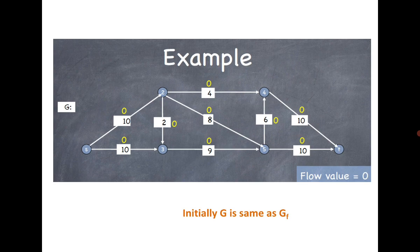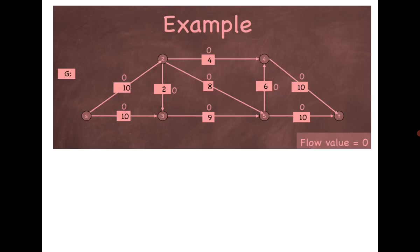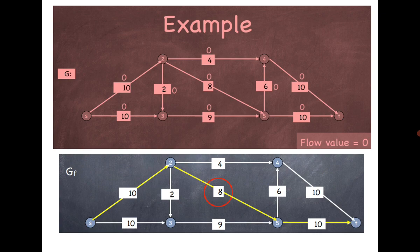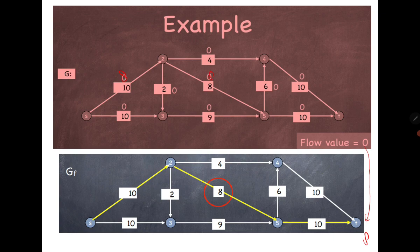In this example, initially graph G is the same as the residual graph, meaning you can choose any path from S to T. We choose the path highlighted in yellow. In this path the capacities are 10, 8, and 10, so we choose the minimum, which is 8. The flow is augmented to 8 along this path — each edge on the path becomes 8.